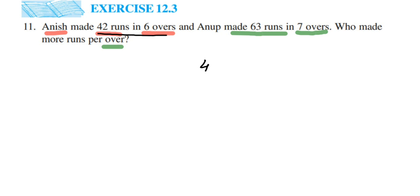42 runs is equal to 6 overs. So here I have to find out overs, per over I want. So this 6 here, you have to transpose it to the other side.